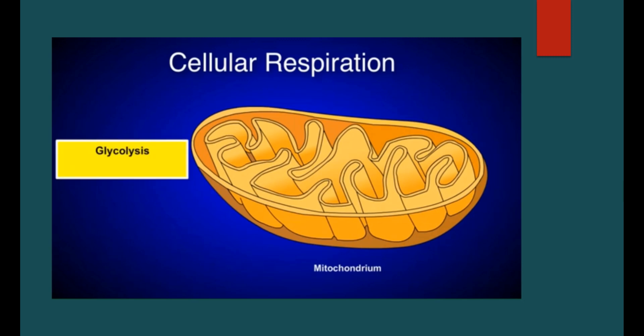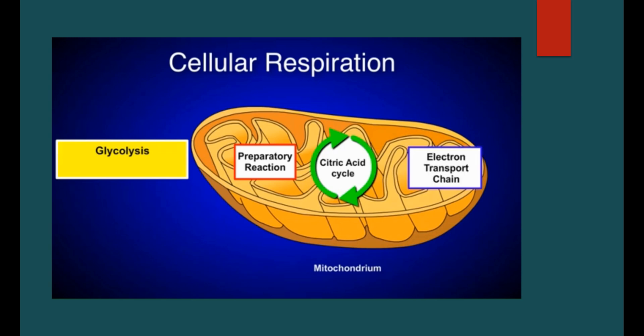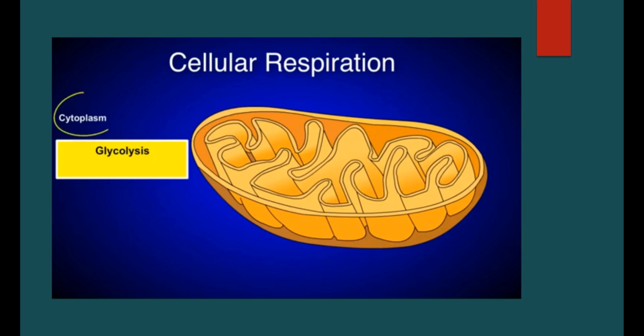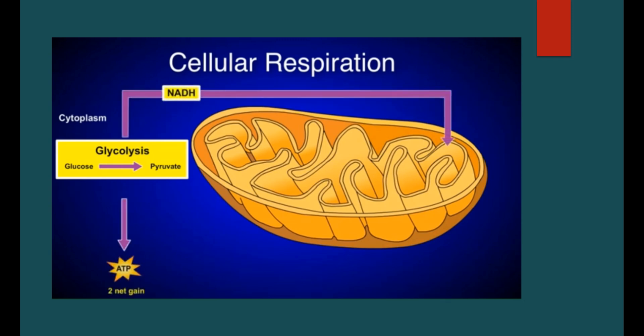These are glycolysis, the preparatory reaction, the citric acid cycle, and the electron transport chain. The first stage, glycolysis, occurs in the cytoplasm outside of the mitochondria. During glycolysis, enzymes break down glucose into two molecules of pyruvate. During this process, two ATP are produced and NADH is released to be used in a later step of cellular respiration.